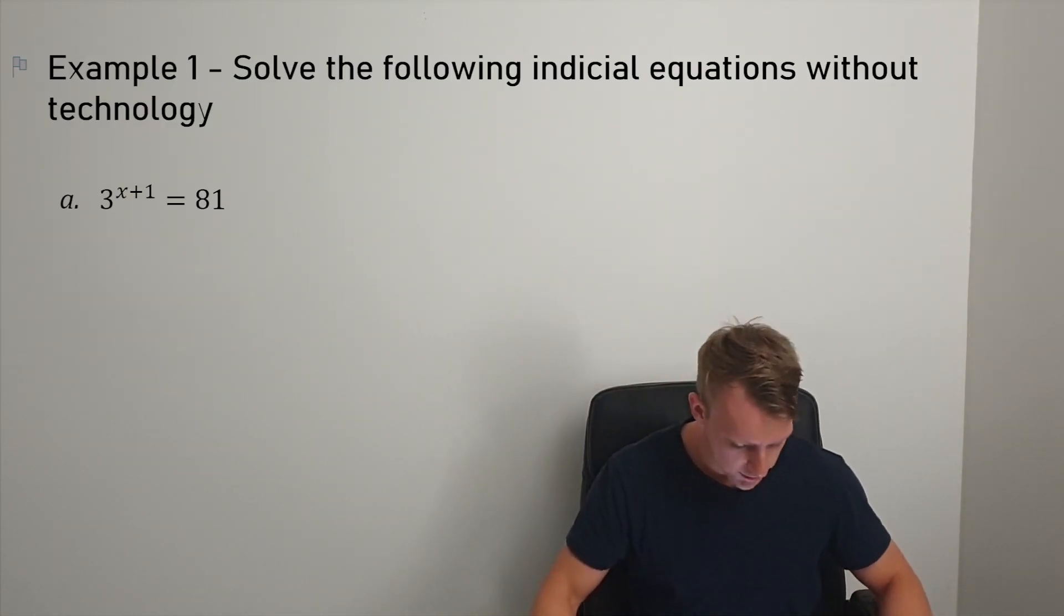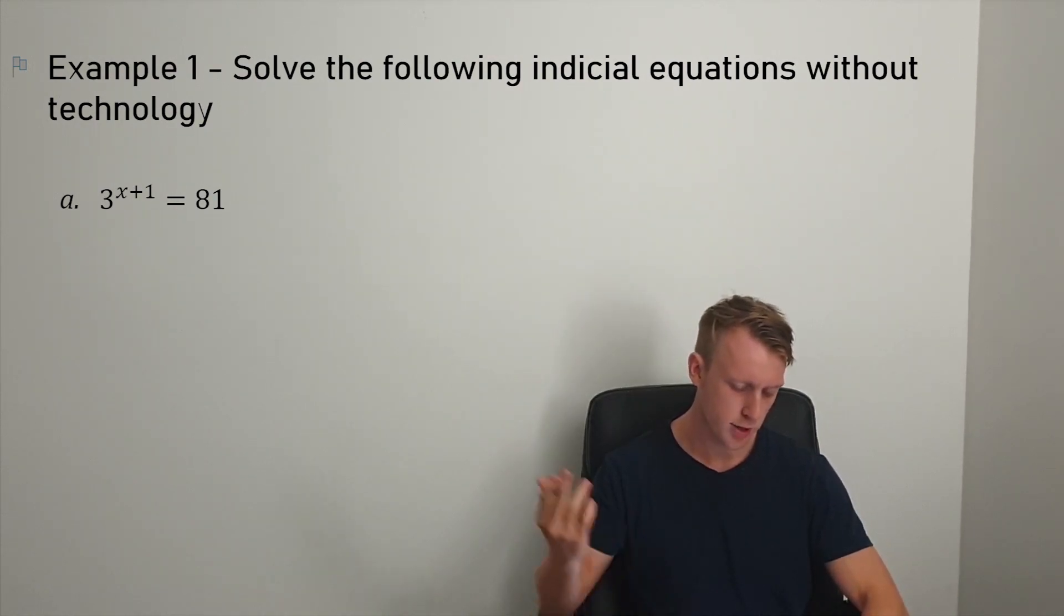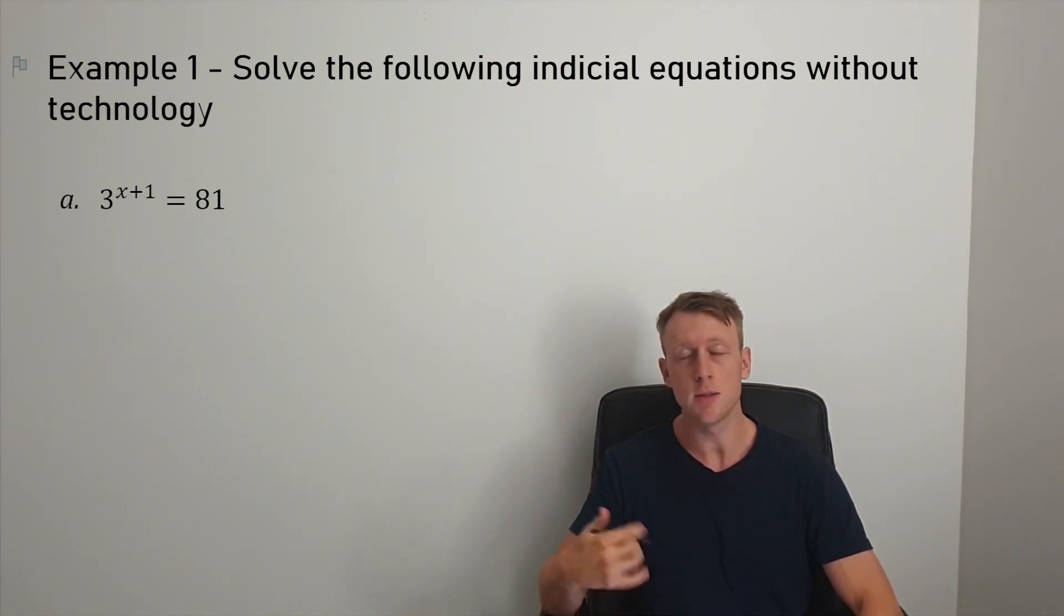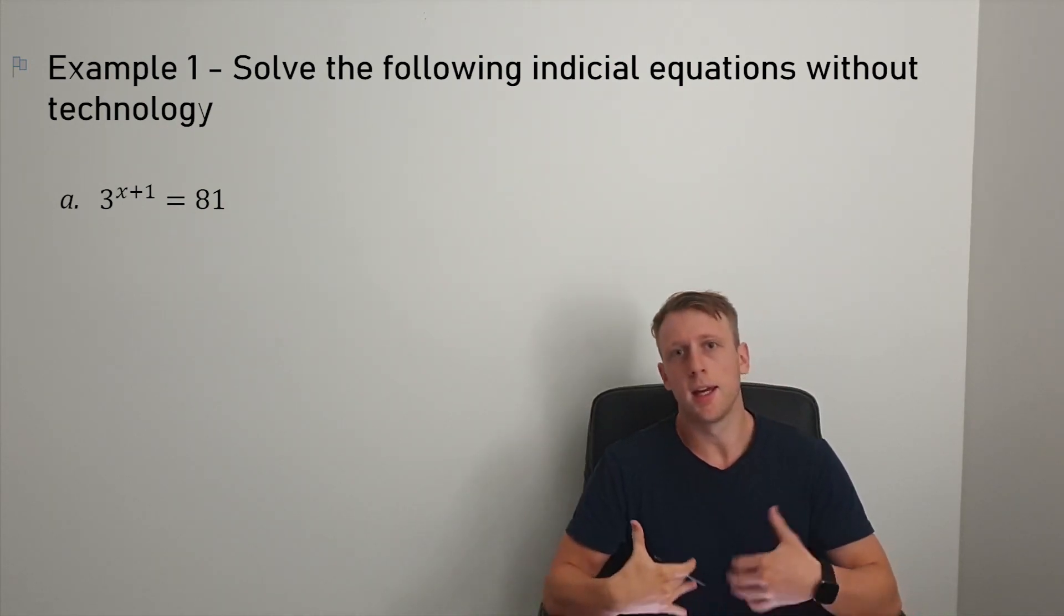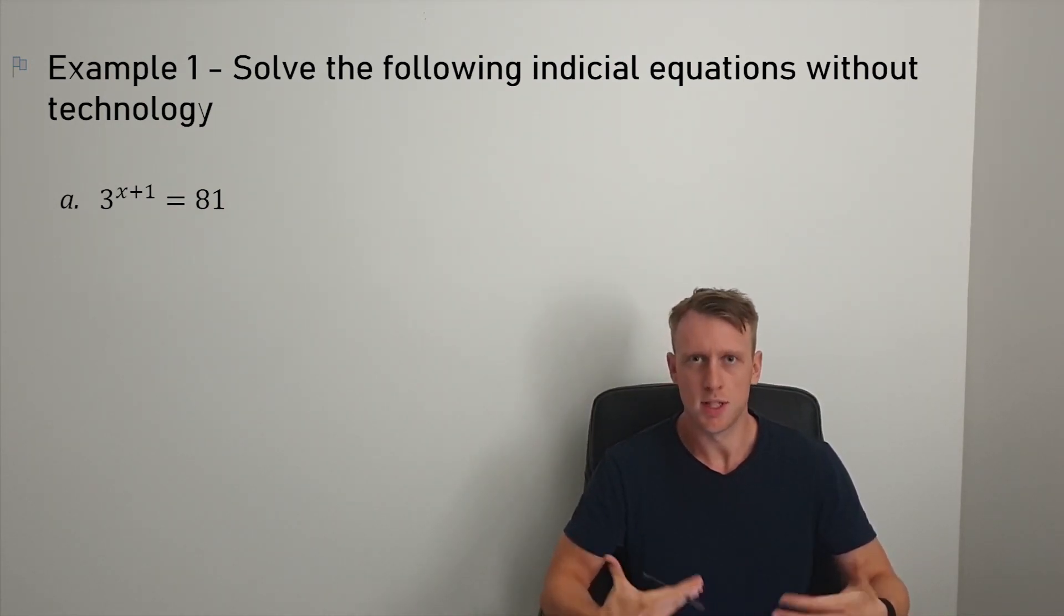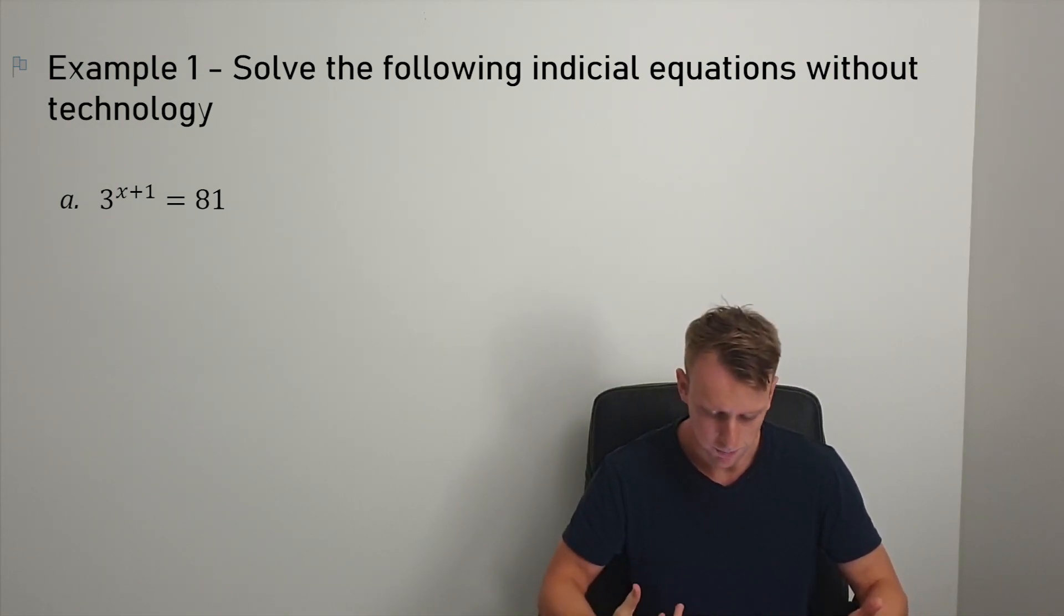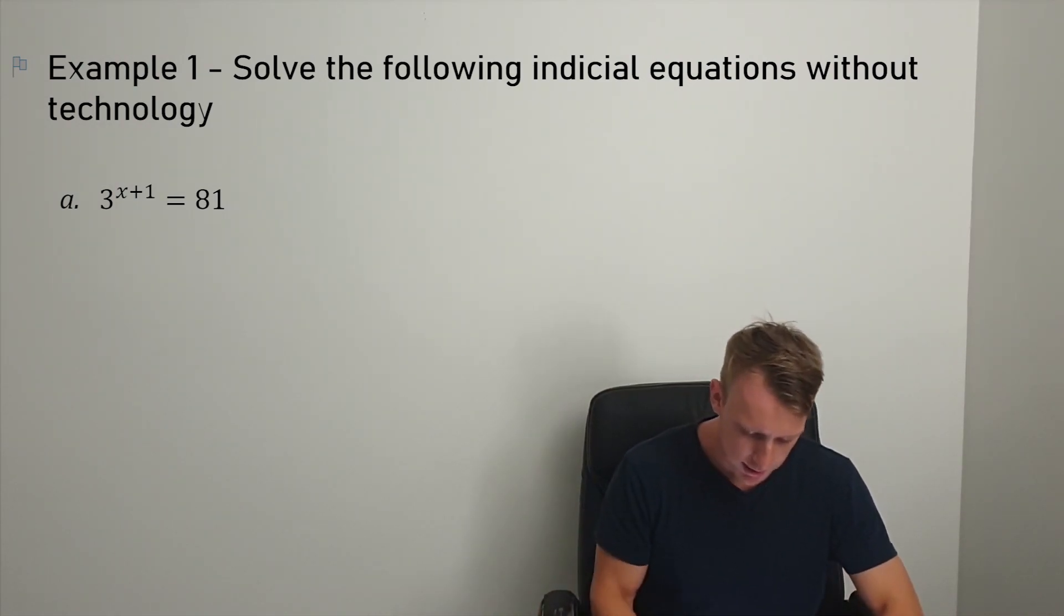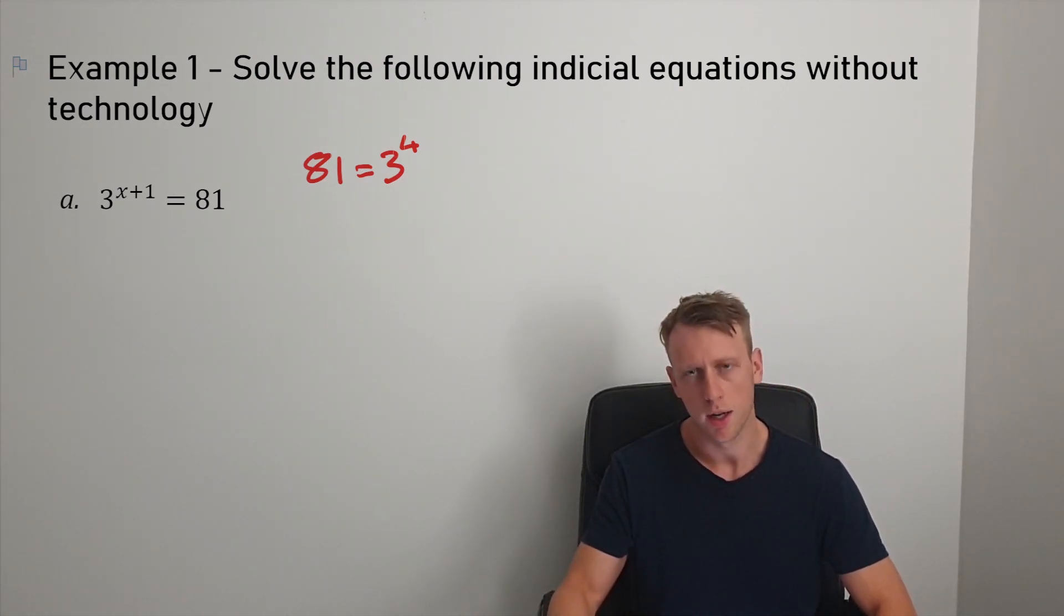Solve the following equation without technology. We've got 3^(x+1) = 81. In order to solve these equations using indices, we need the base number to be the same. In this case, I can spot that 81 is equal to 3 to the power of 4.